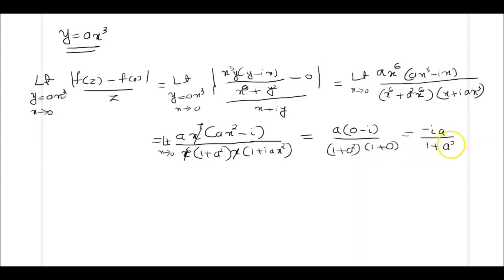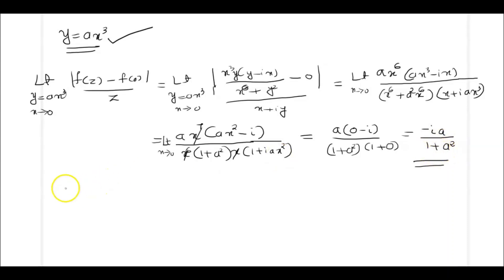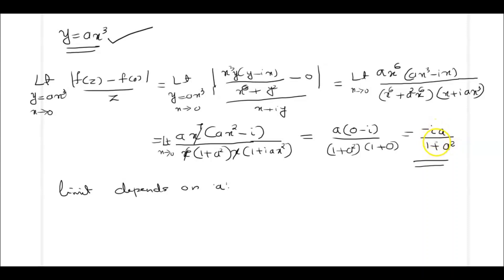So the limit along y = ax³ equals -ai divided by (1 + a²), which depends on a. Since the value depends on the constant a, the limit is not unique as z→0 along the curve y = x³ (taking a = 1). Therefore the limit does not exist as z→0 along the curve y = x³, which completes the proof.